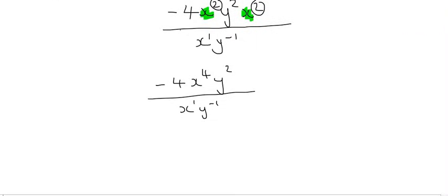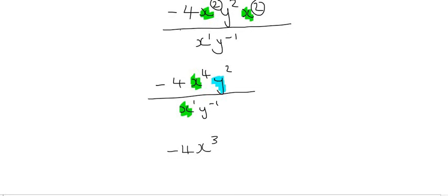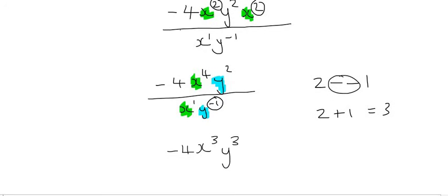Now we can combine vertically: there's an x here and an x here, and we minus the exponents — so 4 minus 1 is 3, giving us minus 4, x to the power of 3. Then looking at the y's, we have to minus their exponents, but be careful: it's 2 minus, and this is already a minus, so this minus and this minus becomes a plus. We end up with y to the power of 3.